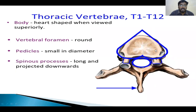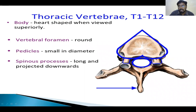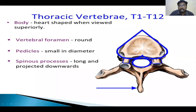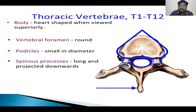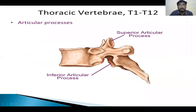Coming to the thoracic vertebra: the body of the thoracic vertebra is heart-shaped and the cavity of the vertebra is oval or almost round in shape. The transverse process has two articular surfaces for attachment of the ribs. There is a long spinous process which is directed posteriorly and downwards. The pedicles of the thoracic vertebra are short in length. In the lateral view, we can see the angulation of the articular facet arranged 45 degrees to the frontal plane.